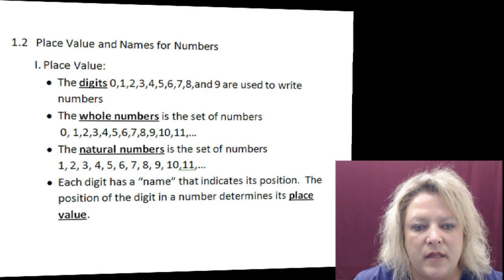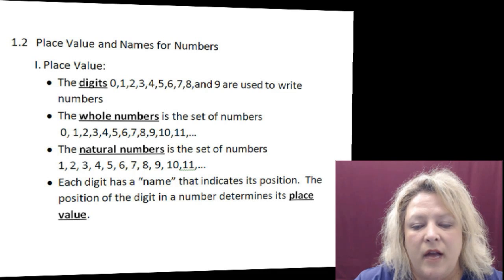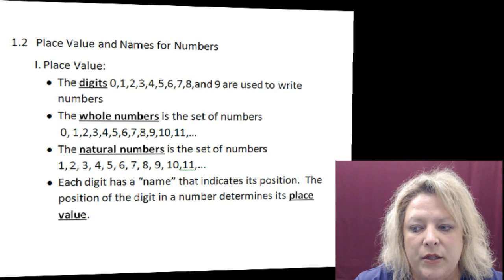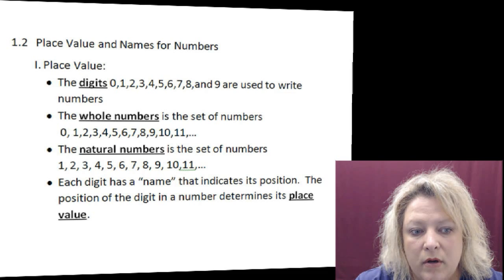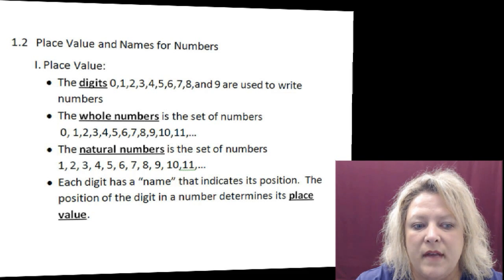Digits are the numbers that we use to write anything throughout the day ever. Then you have a group of numbers called whole numbers. Whole numbers include the digit zero whereas if you notice the next set of numbers will be natural numbers and they start at one.